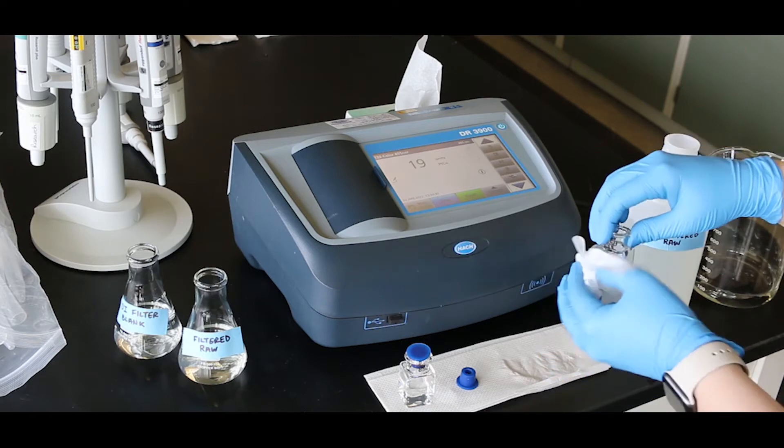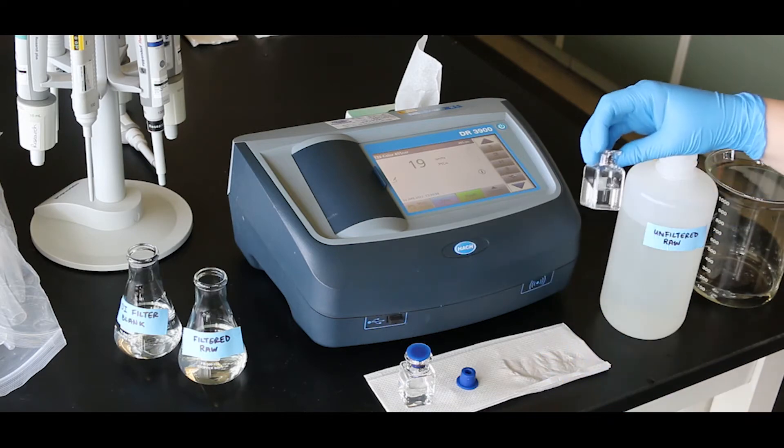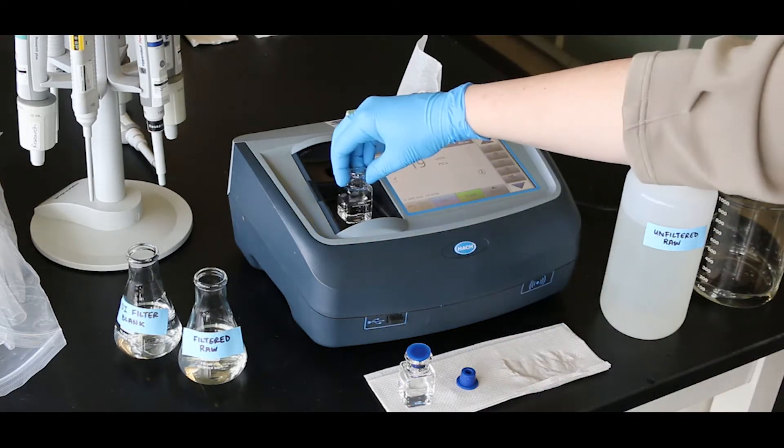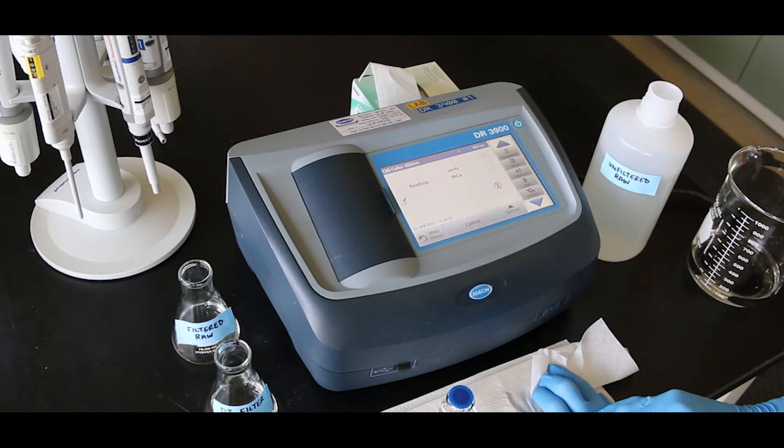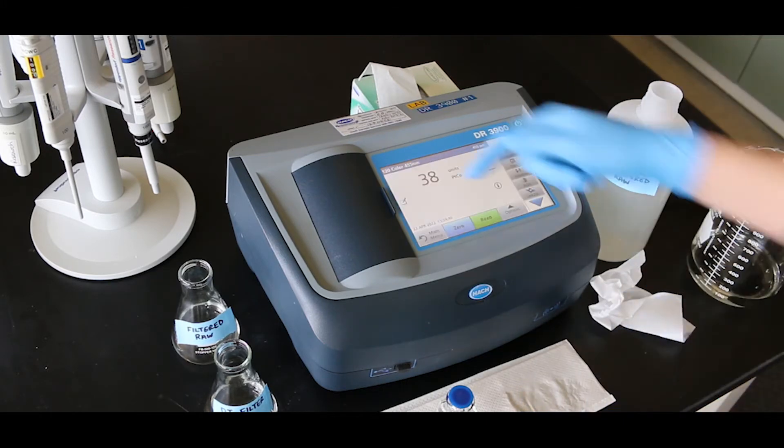Clean the outside of the sample cell and insert it into the instrument. Press read. This value will be your apparent color measurement. Record the results in platinum cobalt units.